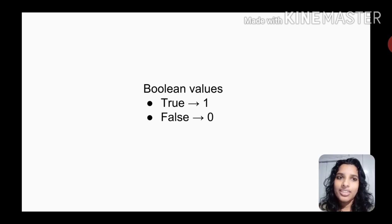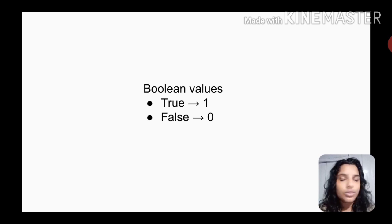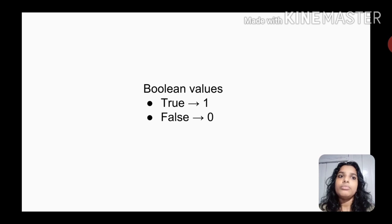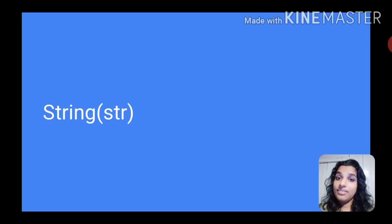That is the boolean values. We have a data type — that is True and that is False. True is written with a capital T, and False is written with a capital F. True means 1 and False means 0.